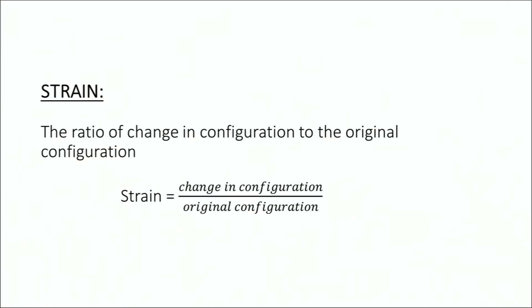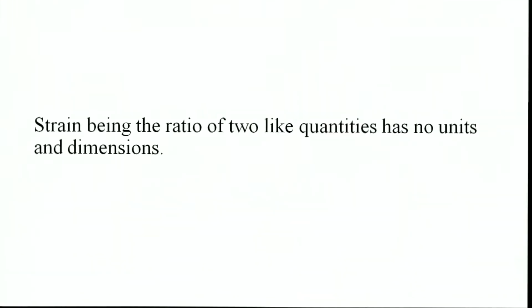Therefore, we can state that the ratio of change in the configuration to the original configuration is strain. After applying a longitudinal stress, there is a change in the length, and the original configuration was also of a length. Therefore, both terms will cancel each other in terms of SI units and it will give you a pure number. Strain, being the ratio of two like quantities, has no units and no dimension.